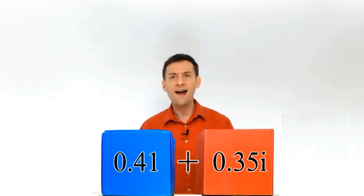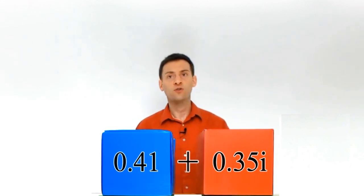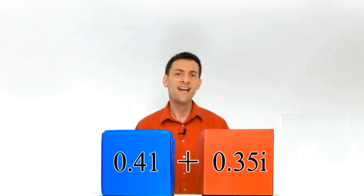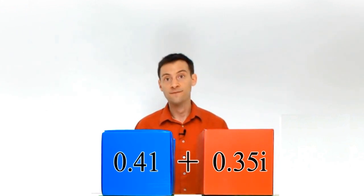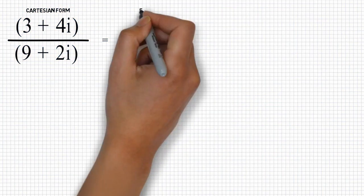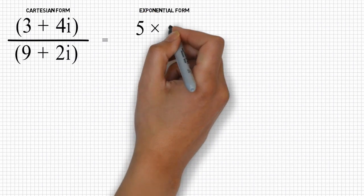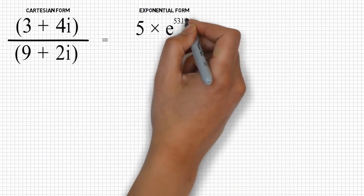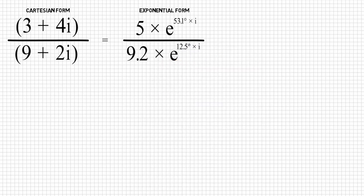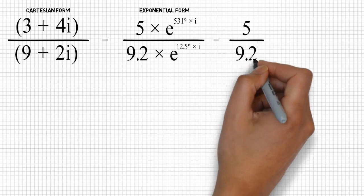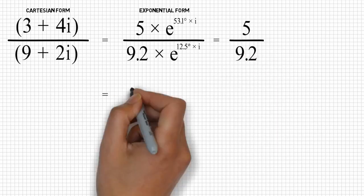Although the FOIL method does allow us to get to an answer when dividing two complex numbers, we had to work very hard to get there. It is here that writing our two complex numbers in their exponential form really comes into its own. If we rewrite our calculation using the exponential form of the two complex numbers, like we did when we multiplied them before, we can use a similar method to divide them. When multiplying, we first multiplied the 5 and the 9.2. Now that we are dividing, we simply divide them instead, giving us the answer 0.54.